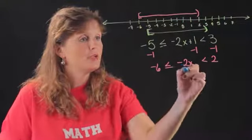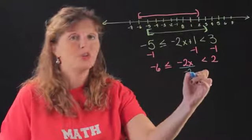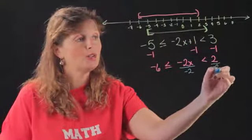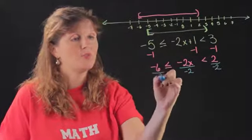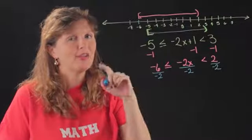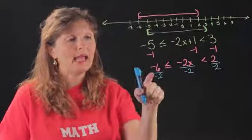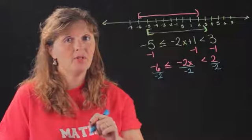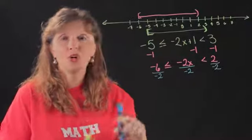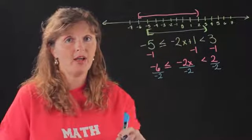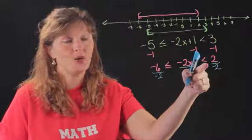Next we get to divide by negative 2, again doing it on all three parts because it's really both sides. Now here's where the kicker comes in. Any time you multiply or divide by a negative number, it turns the entire number line around, which means you have to switch these inequalities.